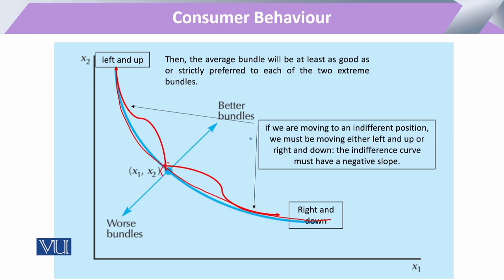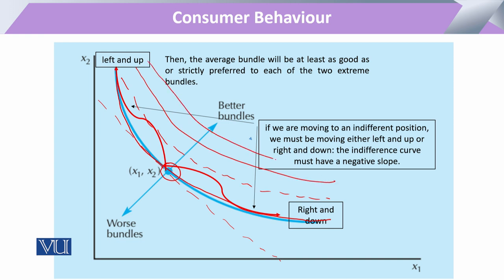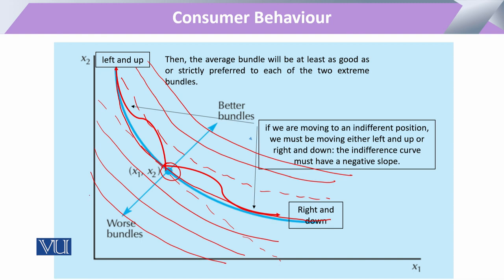This is the point where the consumer has the better bundle or the optimal bundle, because it may have tangency to the budget line. There can be many other indifference curves available to the consumer. If we draw a series of indifference curves and join the optimal points, the consumer moving towards the right side shows increasing levels of welfare or betterment.